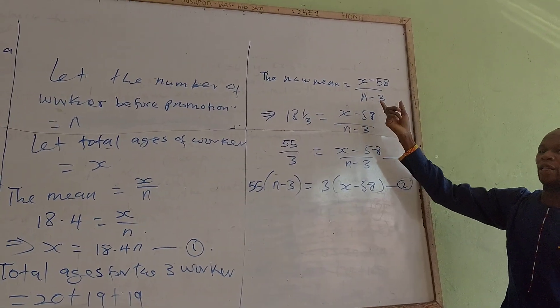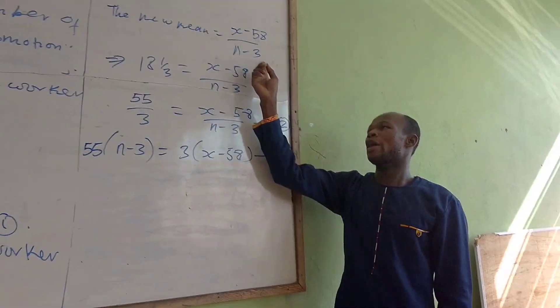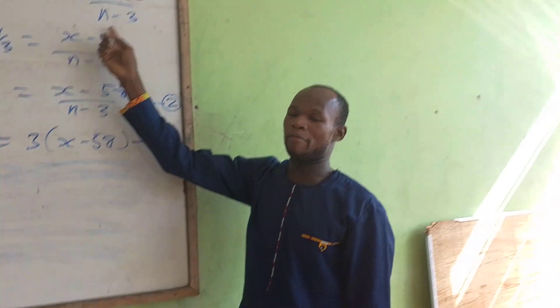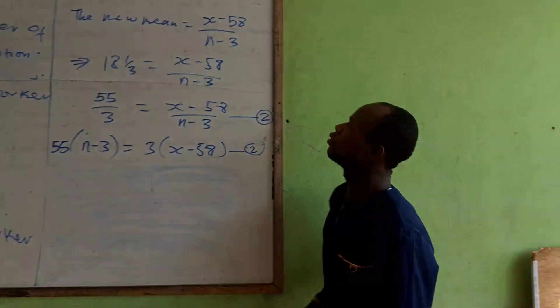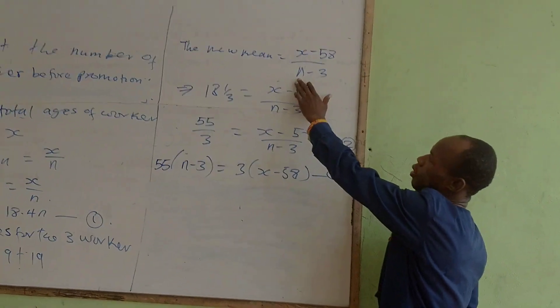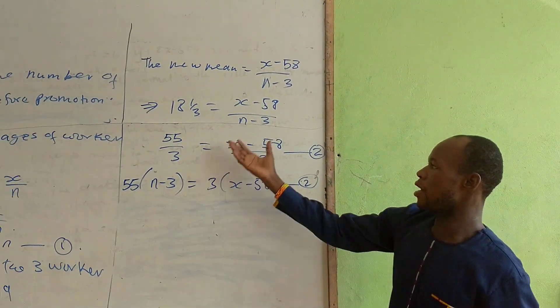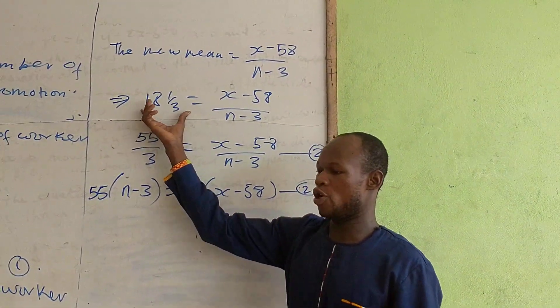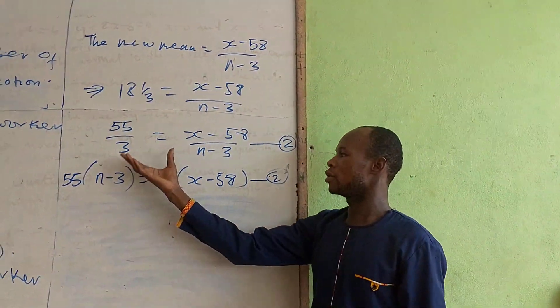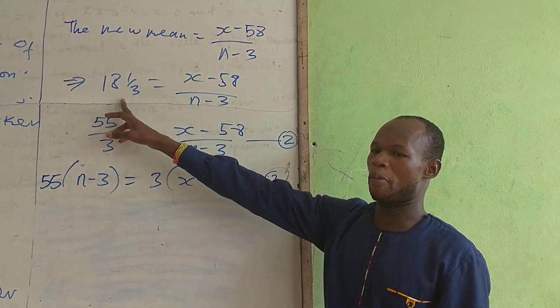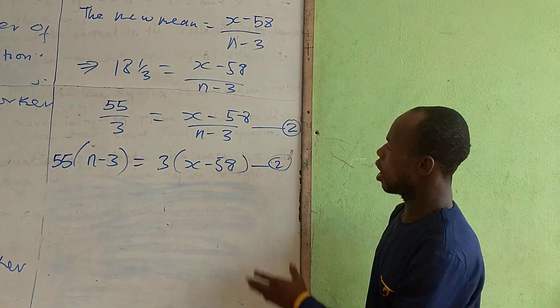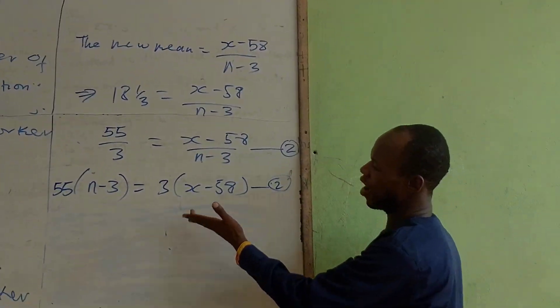So we equate it and you are left with n minus 3. That gives you the number of workers left. And that means we can equate the new mean to this. We change this one to an improper fraction. So at this stage we can simplify this. We now have equation two and equation one.